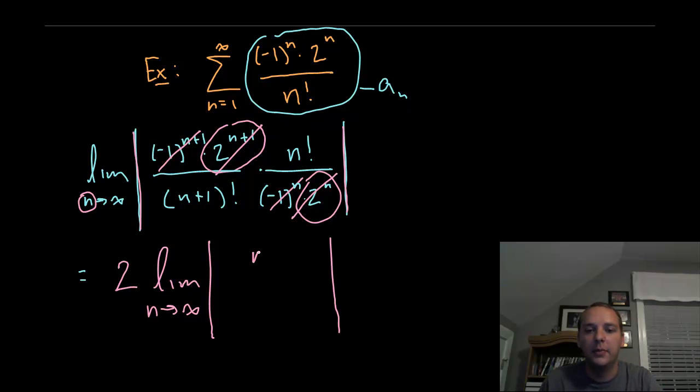We have n factorial over n plus 1 factorial. Now, the thing about factorials, in case you don't know this, is that they can be peeled off into layers. Just as a little side example, if you had, for instance, 7 factorial divided by 5 factorial. This is unrelated to this problem, but in case you did, the 7 factorial, the larger factorial, you could peel off a 7.